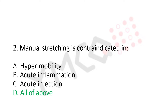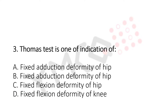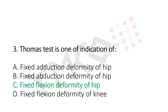Let's move to question number 3. Thomas test is one of the indications of: Option A, fixed adduction deformity of hip. Option B, fixed abduction deformity of hip. Option C, fixed flexion deformity of hip. Option D, fixed flexion deformity of knee. And the answer is Option C, fixed flexion deformity of hip.